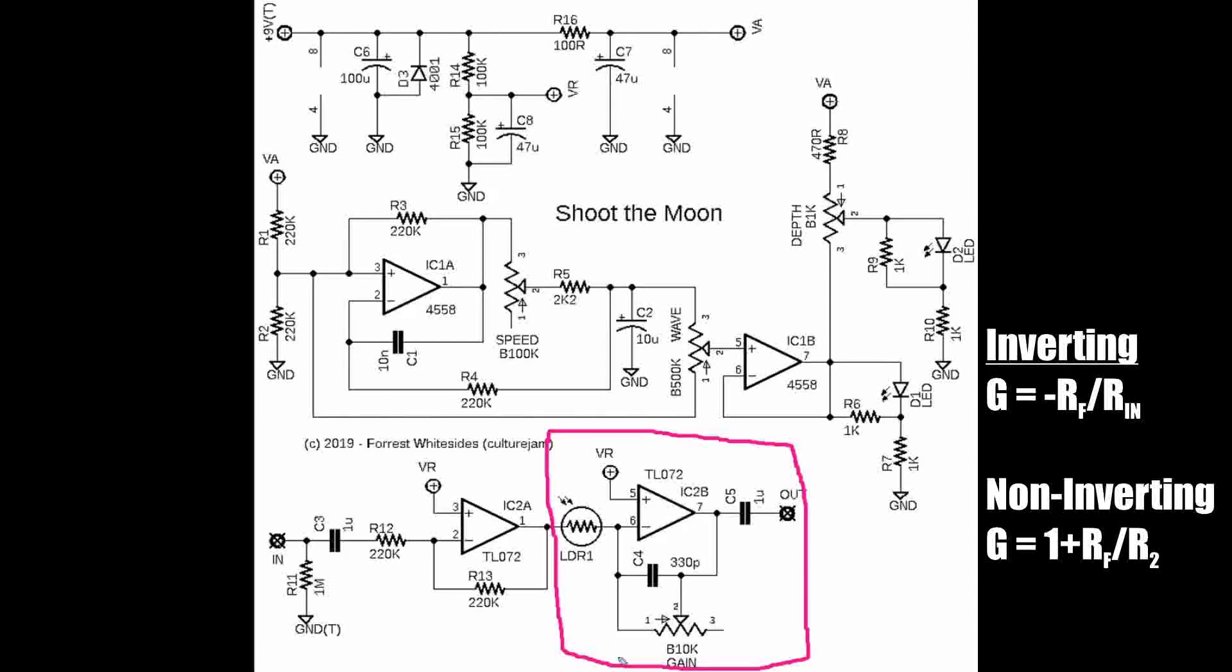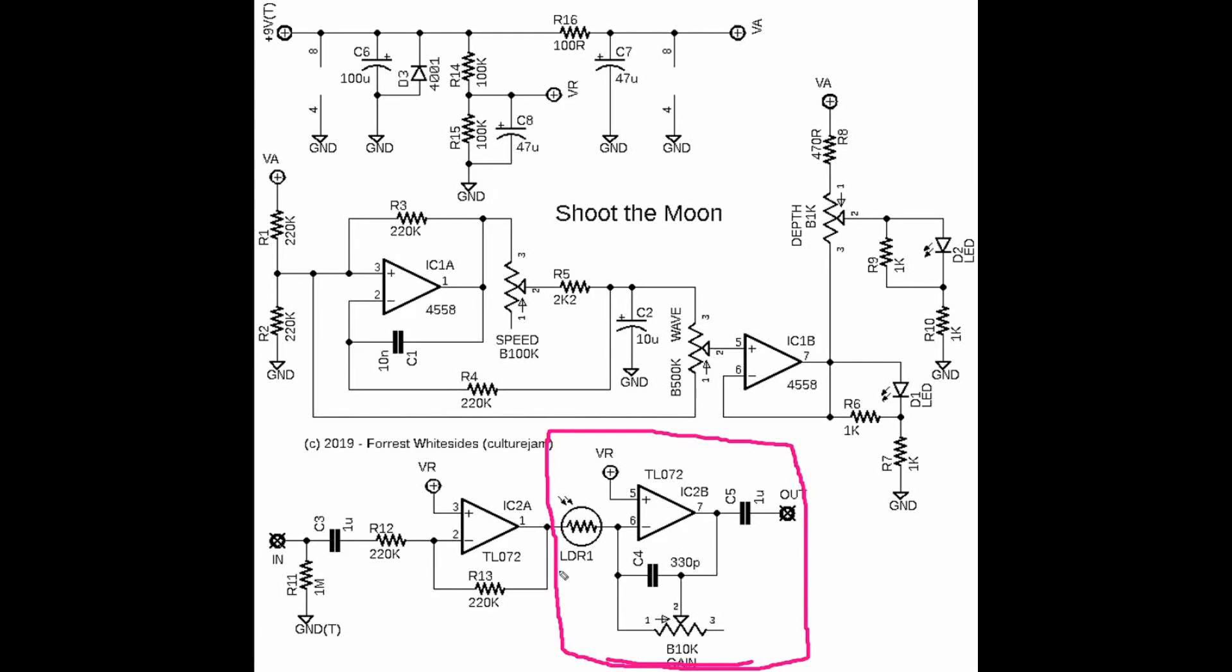And the gain is determined by the ratio of our feedback resistor and our input resistor. So the way that this tremolo works is that this LDR, which stands for light dependent resistor, is going to be one of our resistors governing the gain of this op amp stage. But the thing is that this LDR does not exist in isolation. The way an optical tremolo works is that you use an LED in conjunction with an LDR to create a variable resistance.